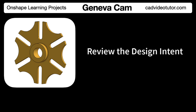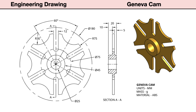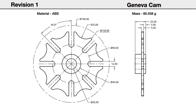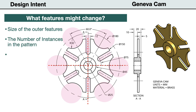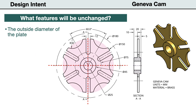Before we model the part in Onshape, let's review the design intent. For this project, we intend our model to be flexible to possible design changes so it will behave predictably if revised. We need to identify any features that might be changed during the design process. First, the size and locations of the arc and slot features that are patterned around the outside of the disk may change. Also, the total number of instances in the pattern may be increased. Last, the diameter or width of the center hub might change.